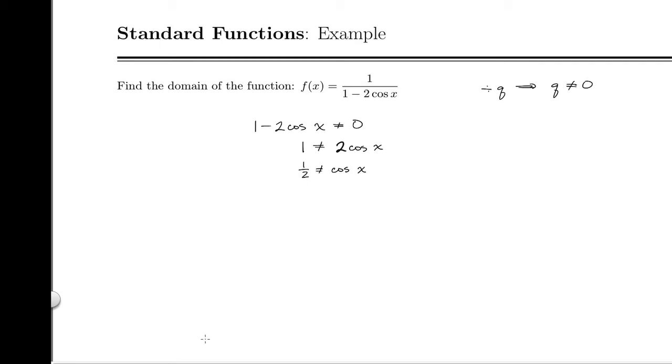Now, we should be very familiar with our unit circle, and so we should know that this happens at pi over 3 plus 2 pi n, where n is an integer.